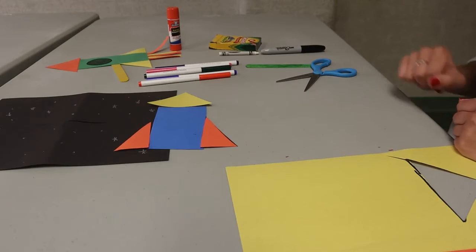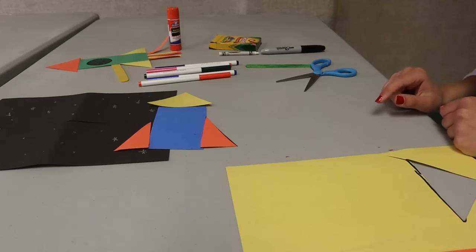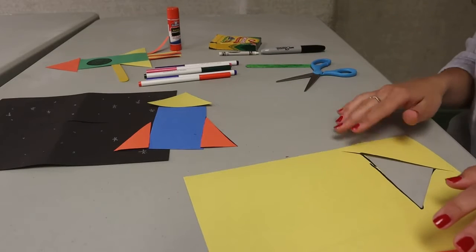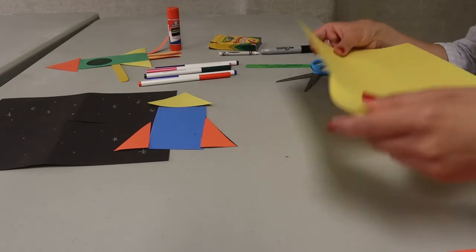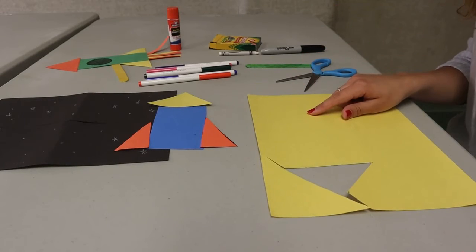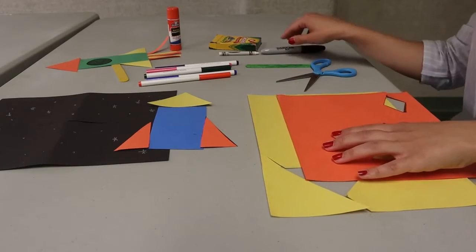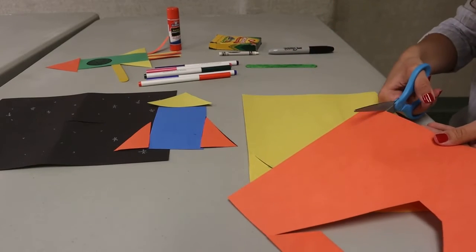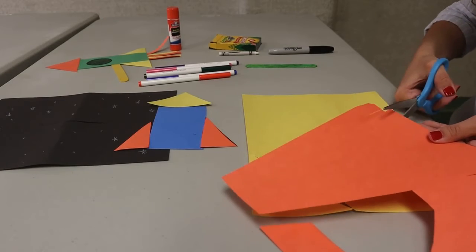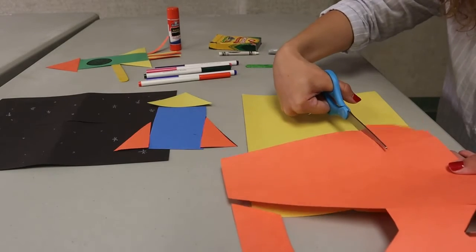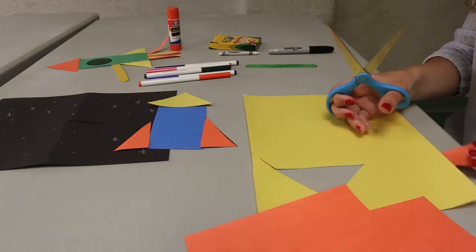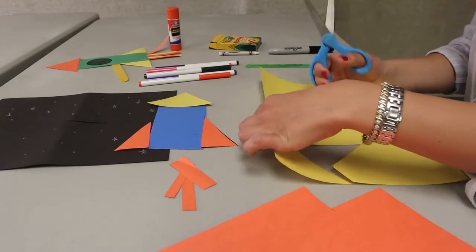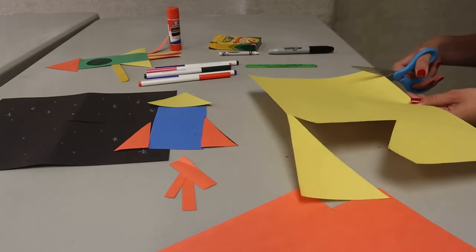Okay, now I need to make the fire to show that the spaceship is going through the sky at a really fast pace. So I'm going to take my yellow piece of paper and my orange piece of paper. And I am going to cut little strips out of my orange and yellow pieces of paper. And you want your strips to look a little something like this. And you can make as many strips as you want.